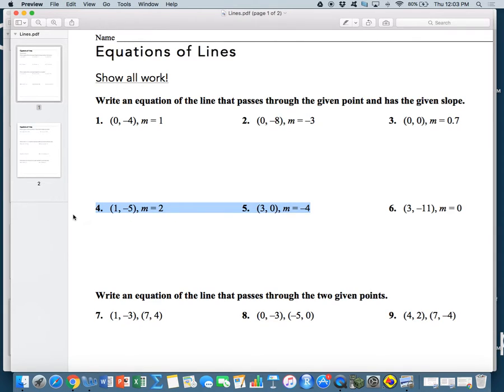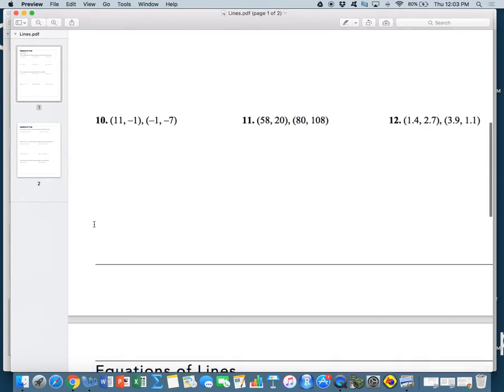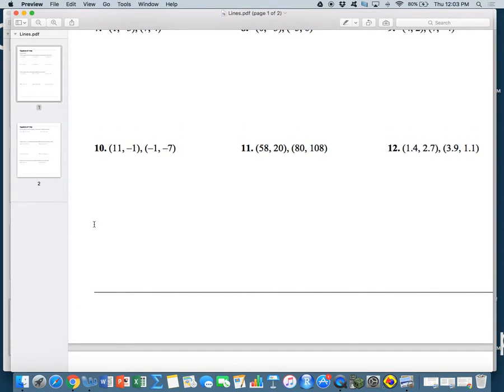Look at problem ten. We're going to do problem ten. So for problem ten, we need to write the equation of line through those two points. How should we start? Find the slope. Thank you. That's what you guys did yesterday. Can somebody remind me what the slope formula is? Y2 minus Y1 over X2 minus X1.